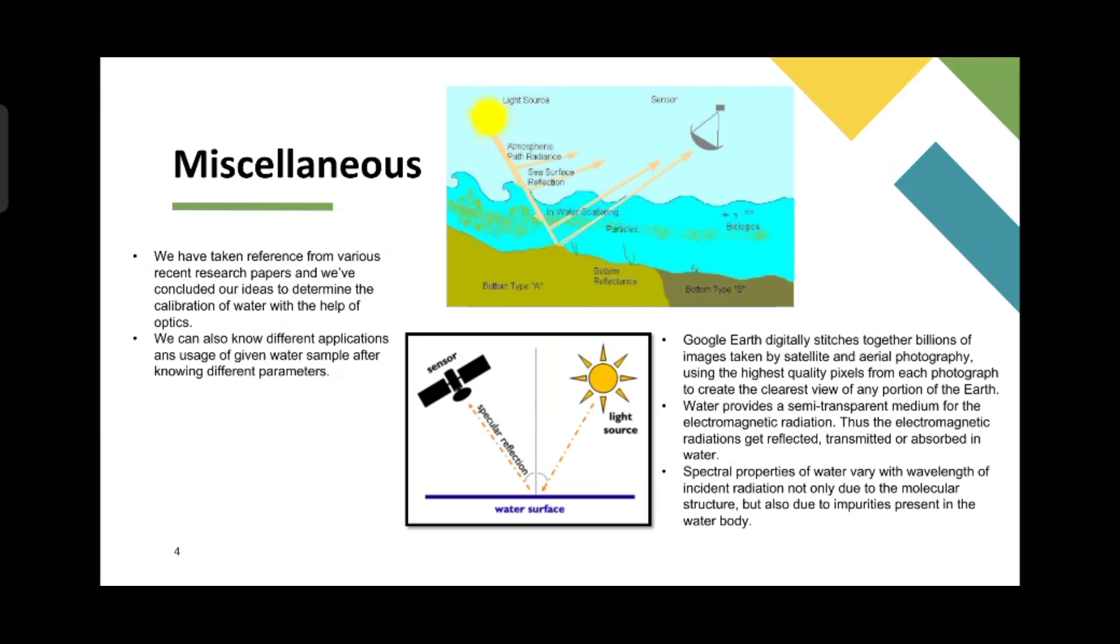Google Earth digitally stitched together billions of images taken by satellite and aerial photography, using the highest quality pixels from each photograph to create the clearest view of any portion of the earth.